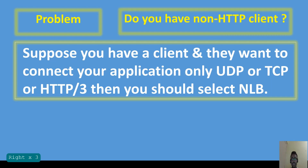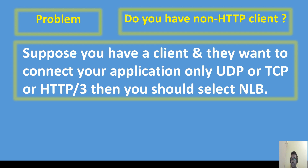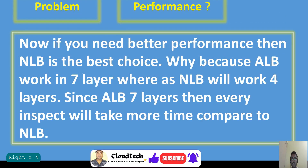Now let's discuss problems one by one and what could be the solution. Suppose you have an application and you are trying to access it from a non-HTTP client — for example, using UDP, TCP, or HTTP/3. If your client has a restriction to use those protocols only, then in that case you need to use the Network Load Balancer; otherwise you can simply use the Application Load Balancer.